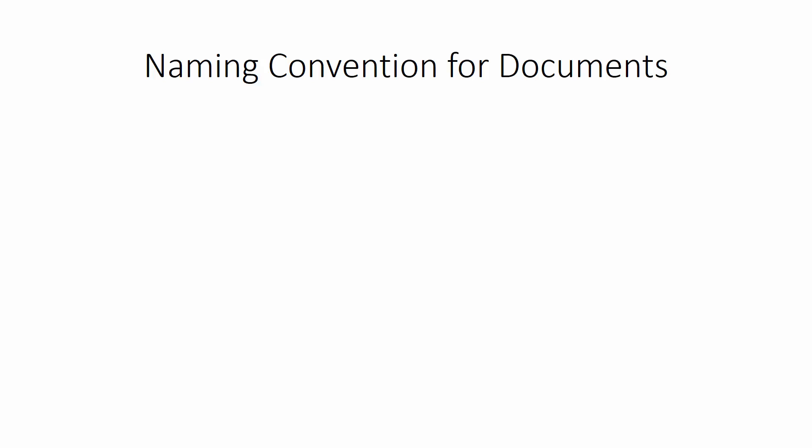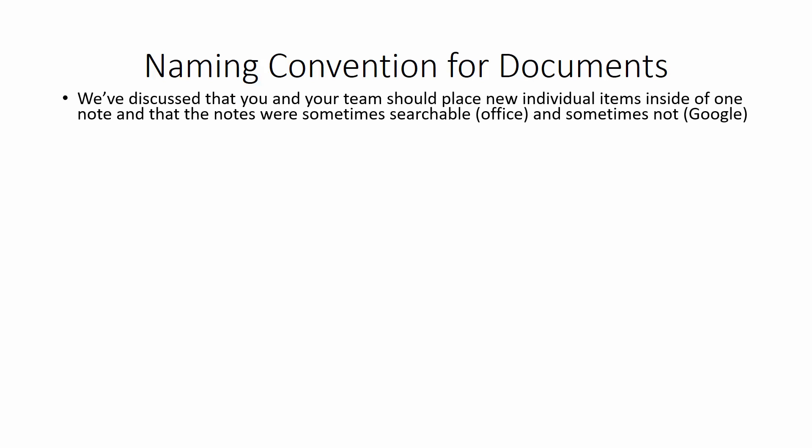Hello and welcome. In this video we're going to be discussing using a naming convention for documents and files that you upload into Evernote in the team shared space. We've already discussed the fact that you and your team should place individual items inside of one particular note, and that those notes were sometimes searchable in the case of an office document and sometimes they weren't in the case of a Google document. But now how should you classify those specific documents within the actual note?